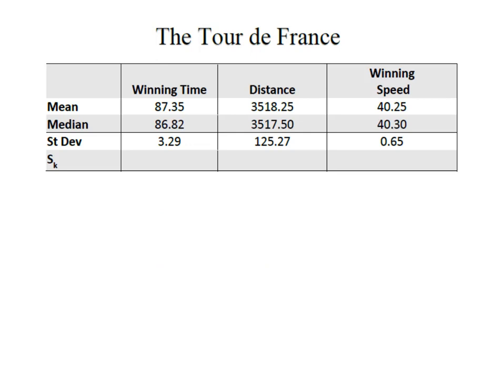What I have here is a little bit of data from the Tour de France. I've looked at the winning time, the distance, and the winning speed. You'll see that I have the mean, median, and standard deviation for all three variables, and what I'm going to calculate are the Pearson's indexes.